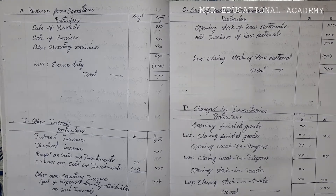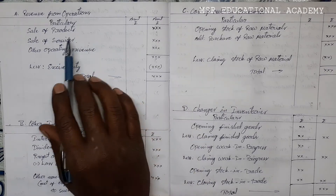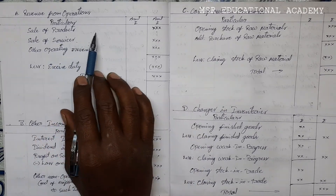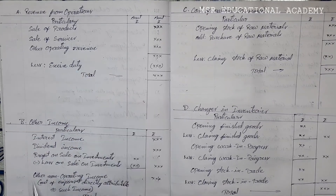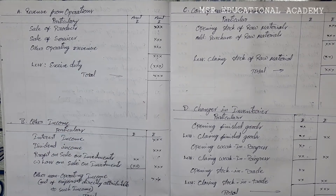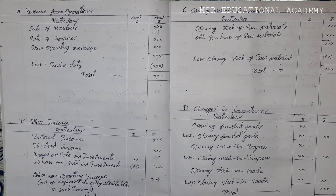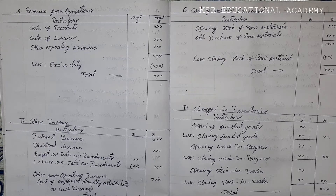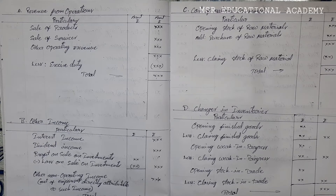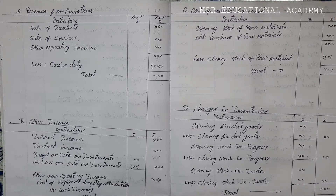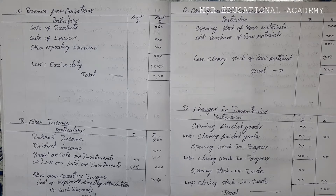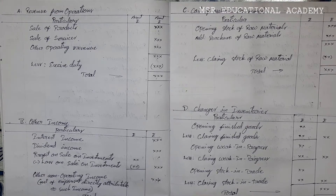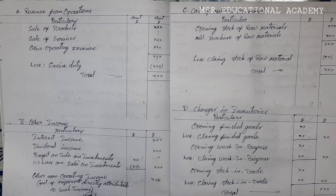In revenue from operations, if there are any returns on sale of products or sale of services — that is, sales returns — we should deduct those from the particular sale of products. That is an important point to remember.